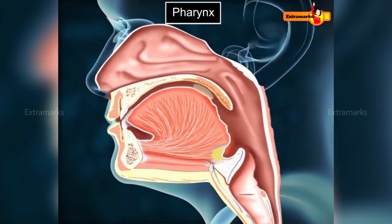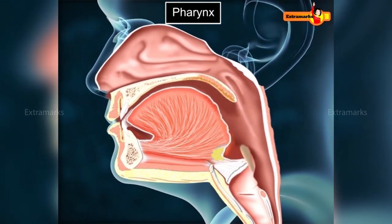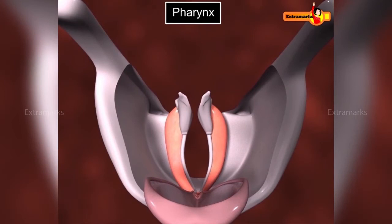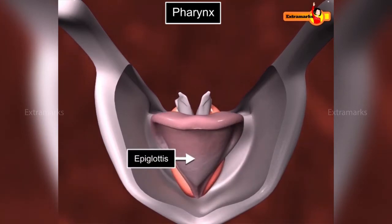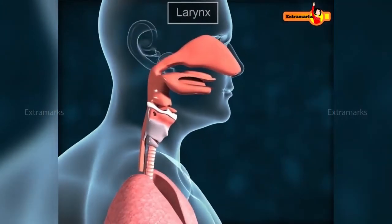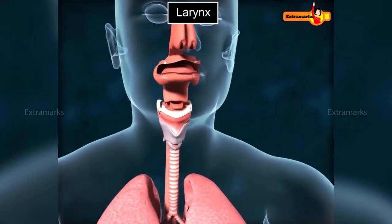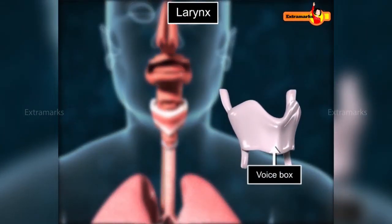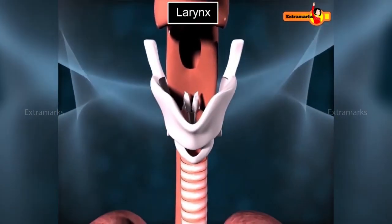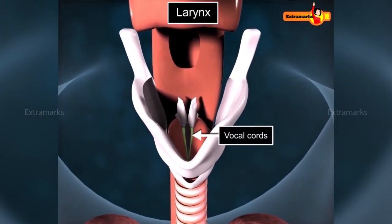The pharynx is a common passage for both food and air. To prevent food and liquid from entering the air passage, a small flap of tissue called the epiglottis closes the glottis — the opening of the larynx — during swallowing. The larynx, also called the voice box, is a hollow cartilaginous structure with two ligamentous folds called vocal cords that help produce different sounds. The glottis is the space between the vocal cords.